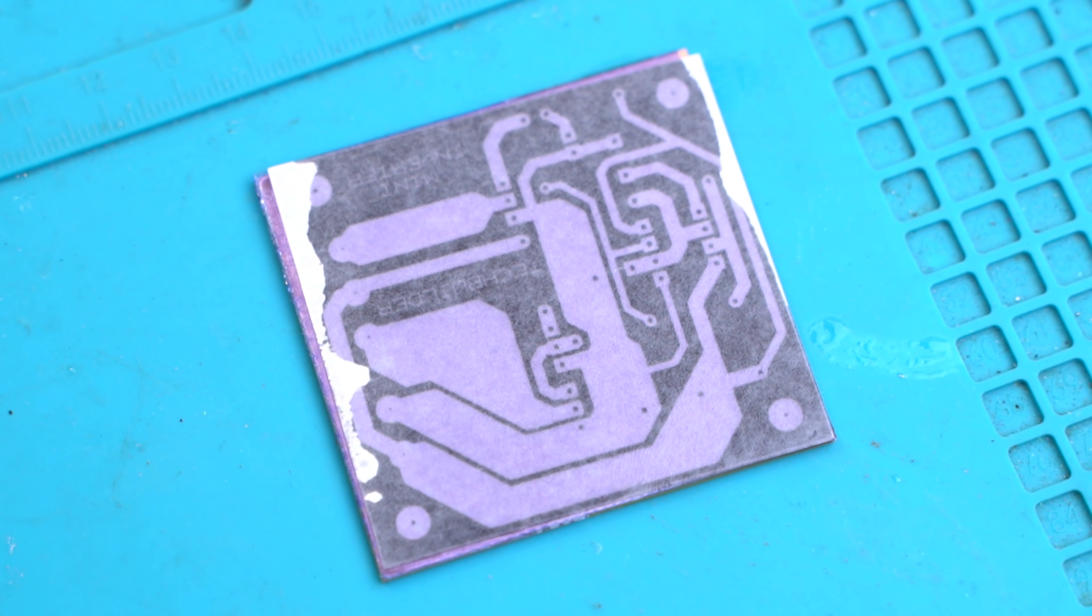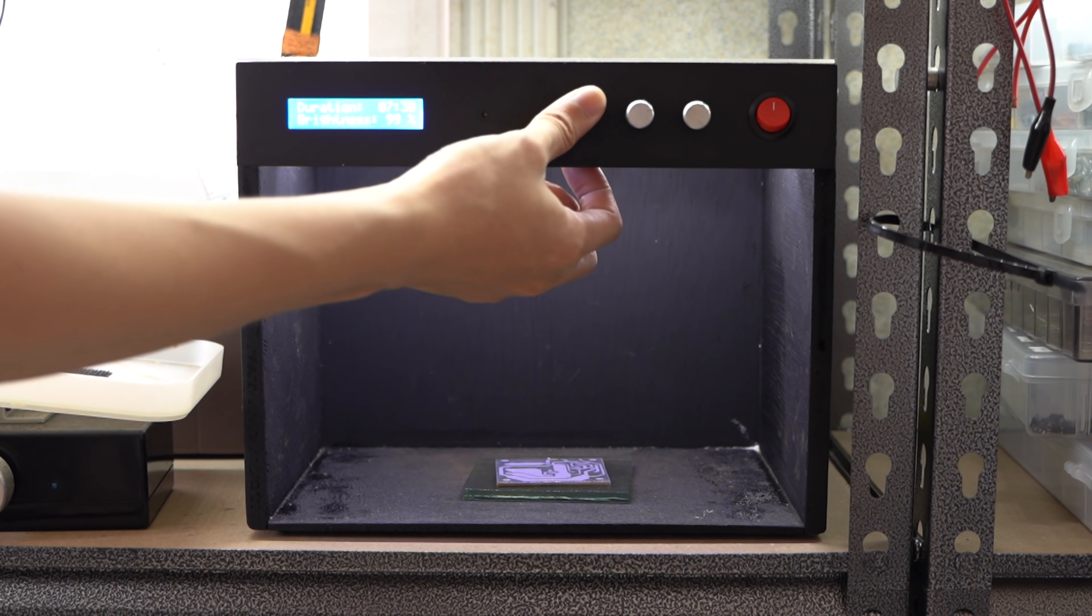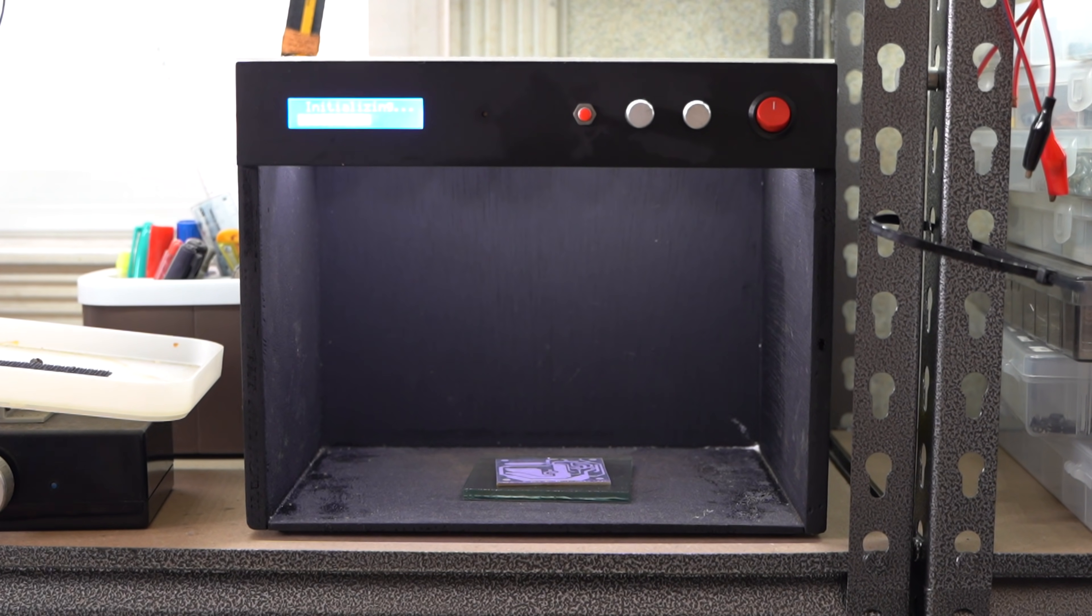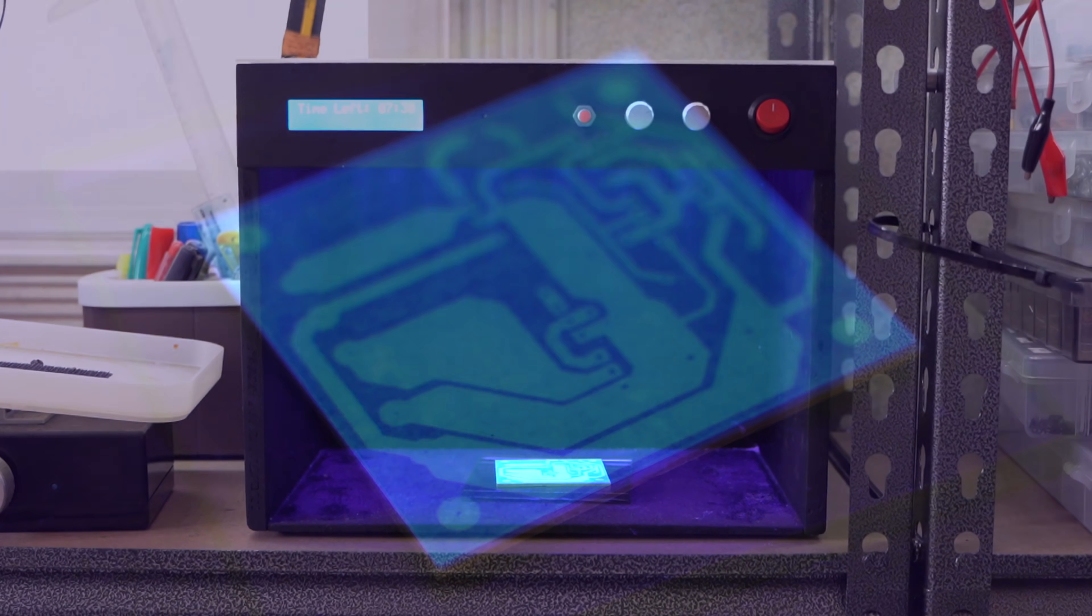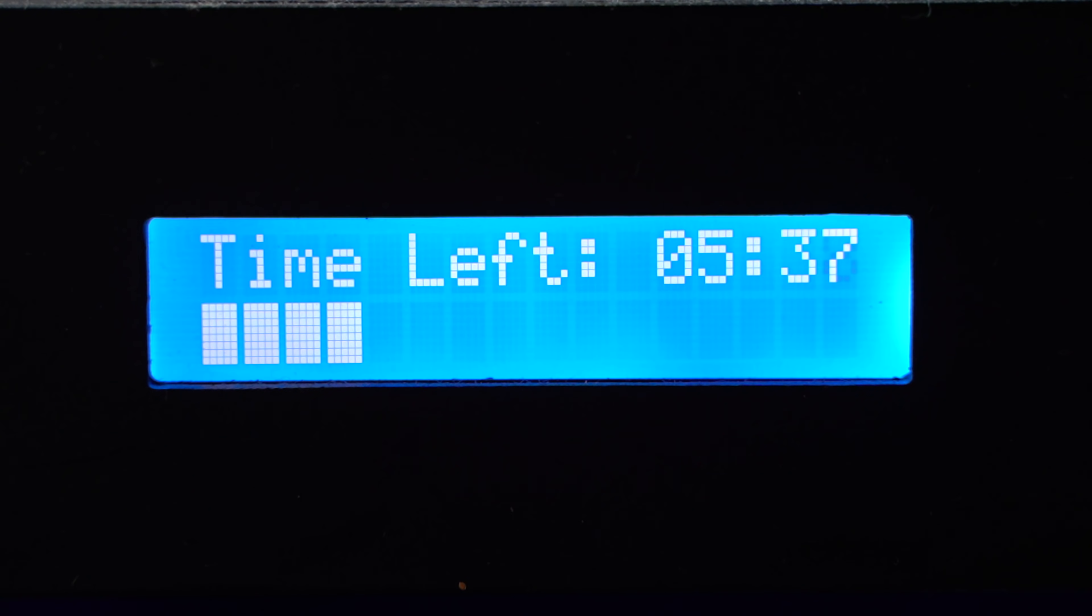For the photo exposure process, you can expose your board using a CFL or LED lamp for around 12 minutes. In my case, my DIY UV exposure box can do it in 7 minutes.